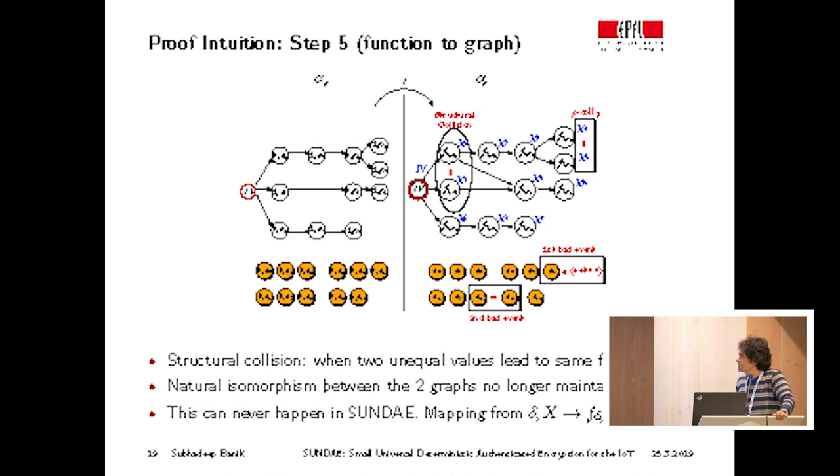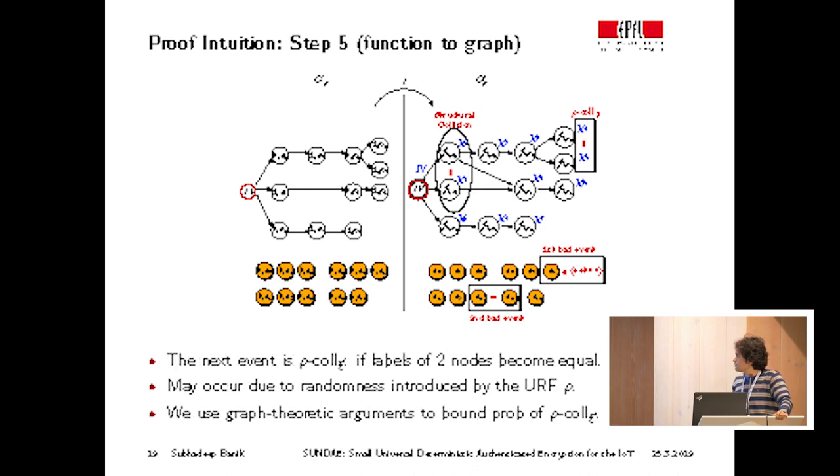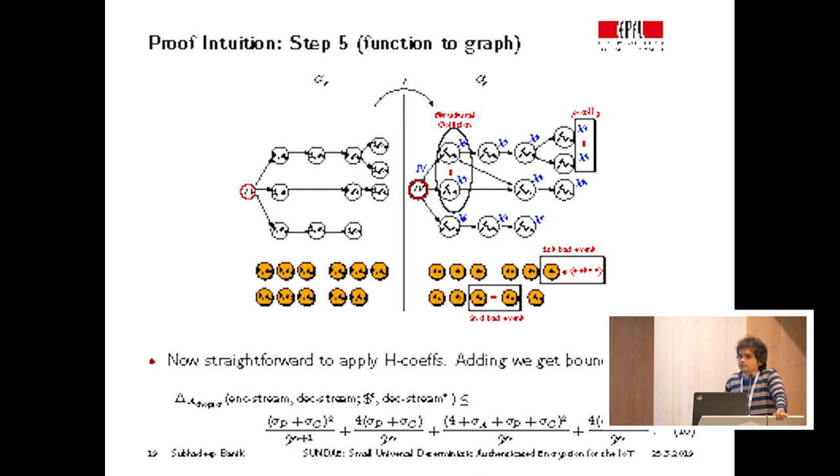The main point is that such a structural collision will never occur in Sundae because the mapping from delta x to f of delta x is essentially injective. So this is something we do not have to worry about in this mode of encryption. And the final event of interest is a node collision in which the labels of two nodes collide, which may occur due to randomness induced by applying the uniform random functions represented by the edges. So in the paper, we use graph theoretic arguments to prove, or rather to bound the probability that collision occurs between the labels. And once we do that, the application of the H coefficient technique is straightforward. We can prove that the only term that was left behind is bounded by this expression over here.